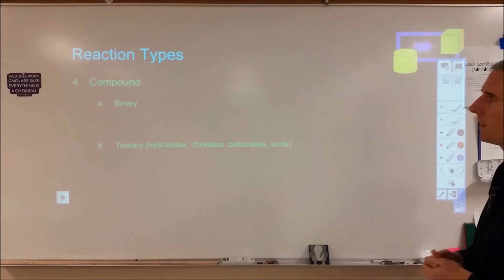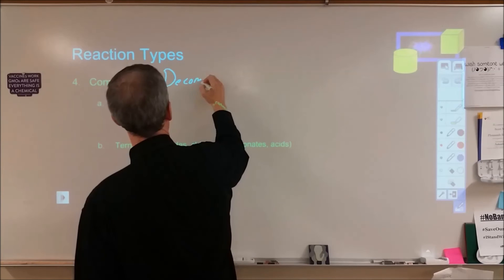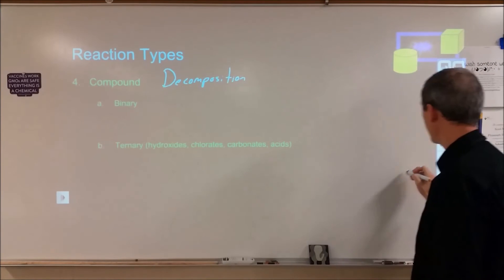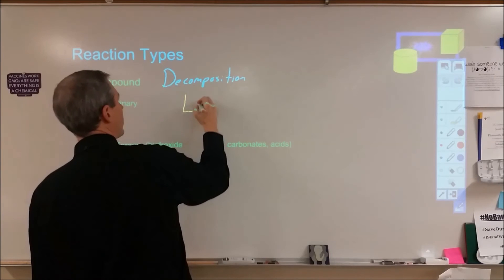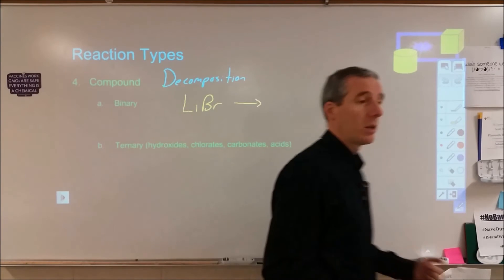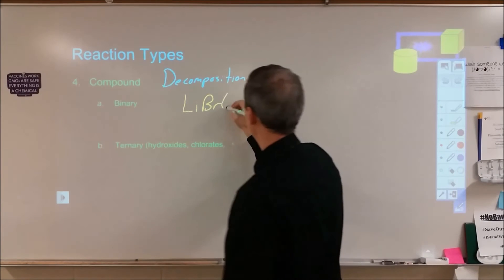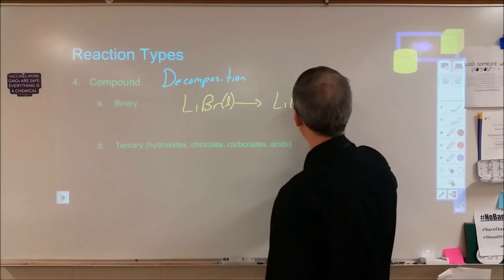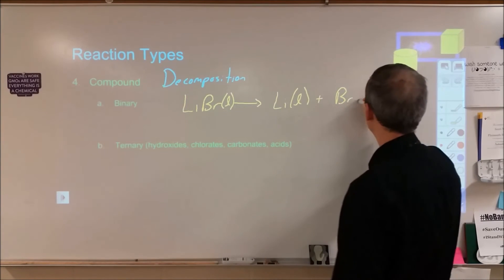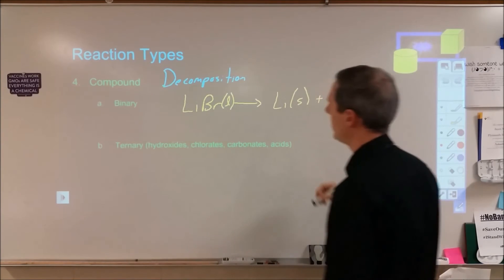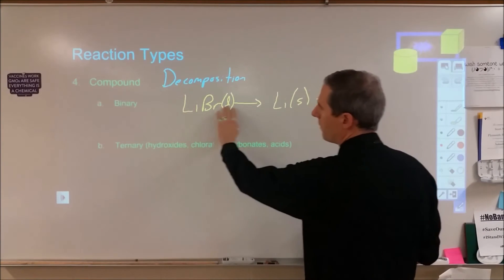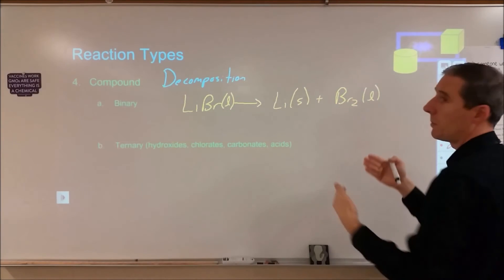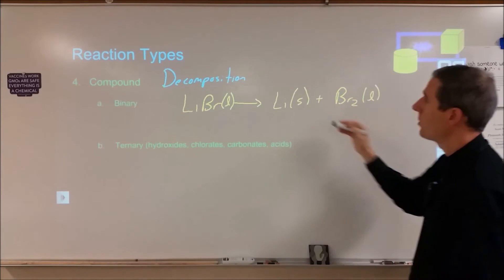If you just start with a single compound, that's going to be decomposition. For decomposition, you can start with binary compounds — meaning the compound contains just two elements, like lithium bromide. If you run electricity through molten lithium bromide, you're going to produce lithium metal and bromine. Watch out for diatomics, but otherwise it's a very straightforward reaction: a binary compound decomposes into its constituent elements.